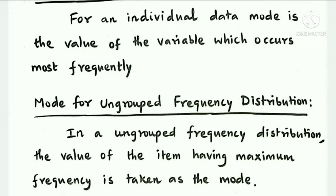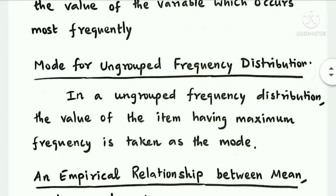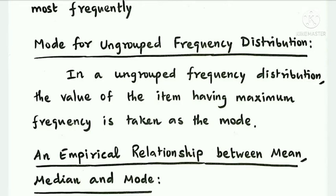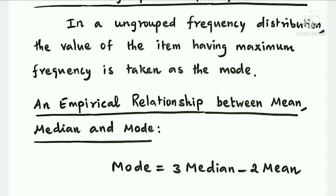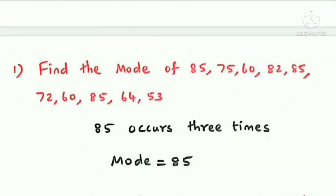For ungrouped frequency distribution, the mode is the value of the variable which occurs most frequently. Consider the data: 75, 60, 82, 85, 72, 60, 85, 64, and 53.